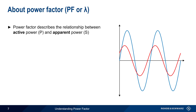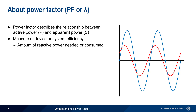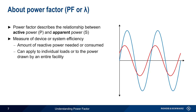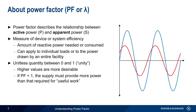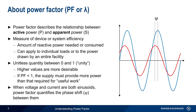Power factor, abbreviated PF or sometimes lambda, describes the relationship between active power — that is, power absorbed or used by the load — and apparent power, or the total power flowing in the circuit. Therefore, power factor is a measure of efficiency, since it's related to the amount of reactive power that's needed or consumed. Power factor can be measured for an individual device or load, or it can apply to a group of loads or an entire facility. Power factor is a unitless quantity between zero and one. Higher values of power factor are usually more desirable, and maximum efficiency occurs when power factor is one or unity, since this means there is zero reactive power. A power factor of less than one means that the supply has to provide more power than what's needed for useful work. Note that in the case where voltage and current are both sinusoids, power factor can be used to quantify the phase shift phi between the two waveforms.